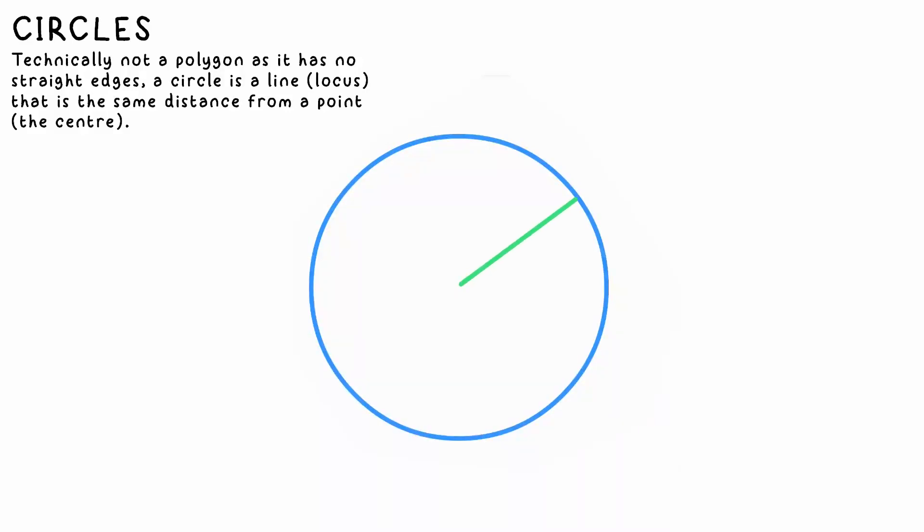A few terms specific to circles. Radius is the distance from the center of the circle to the line. Diameter is double this.